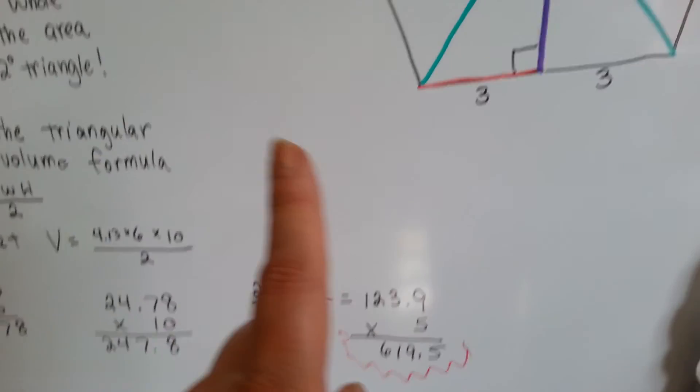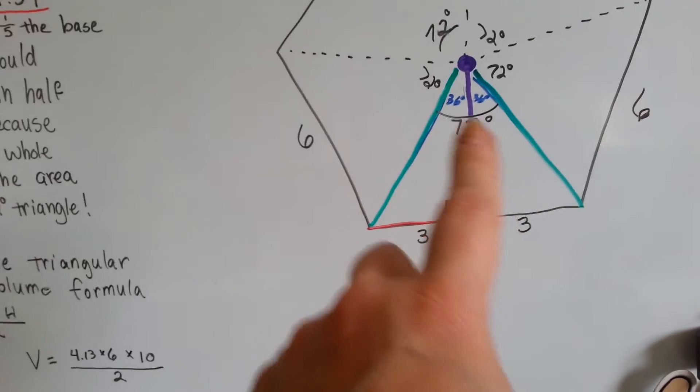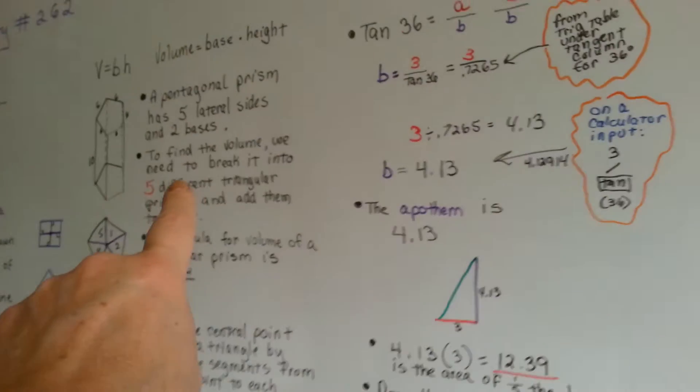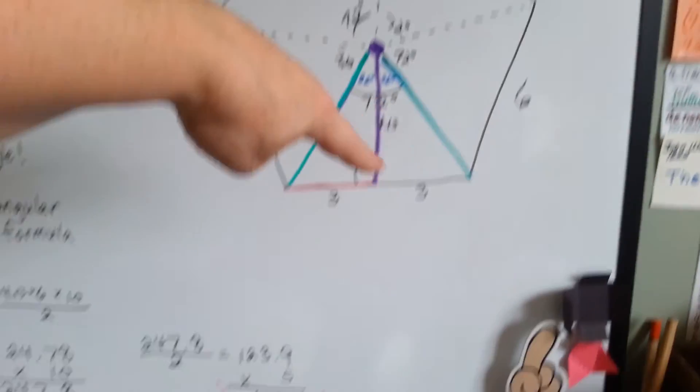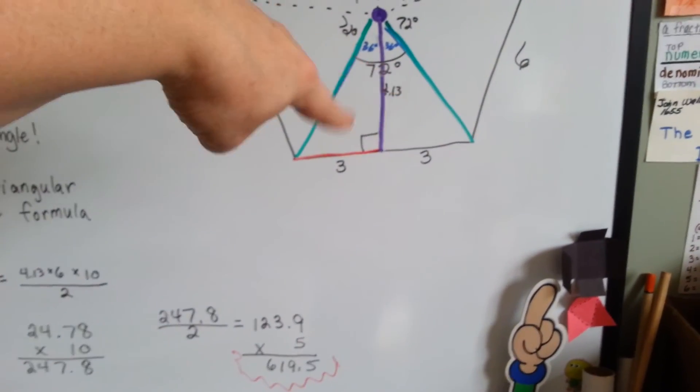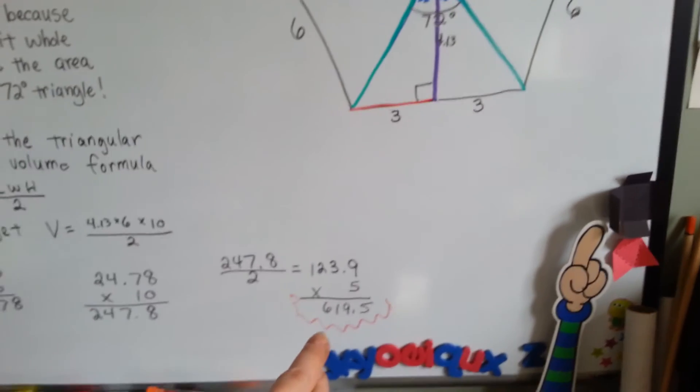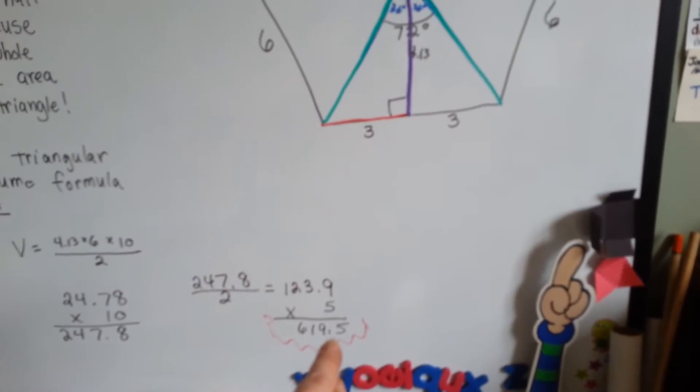That is the volume of one of these triangles. Now, we need to multiply it by 5. Remember, we split it into 5 triangles? So, the volume of one of these is 123.9. We need the rest of them. So, we're going to multiply this number by 5 and get 619.5.